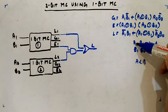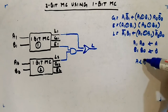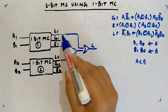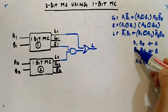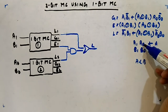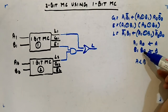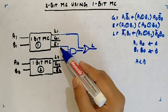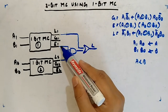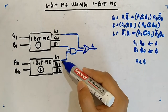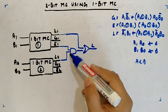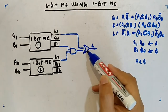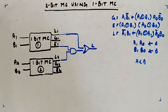Either you have A1 less than B1, then you will have A less than B directly, or you have A1 equal to B1 and A0 less than B0. We get A1 equal to B1 from the first comparator and A0 less than B0 from the second. These two are ANDed, and either this line or that line produces the overall less output.